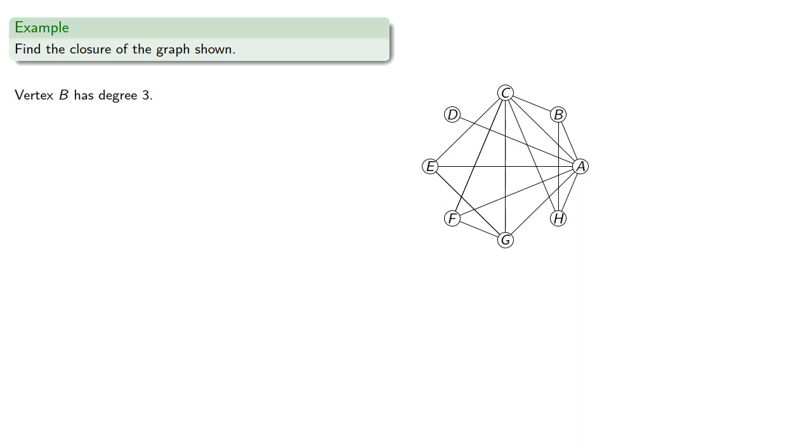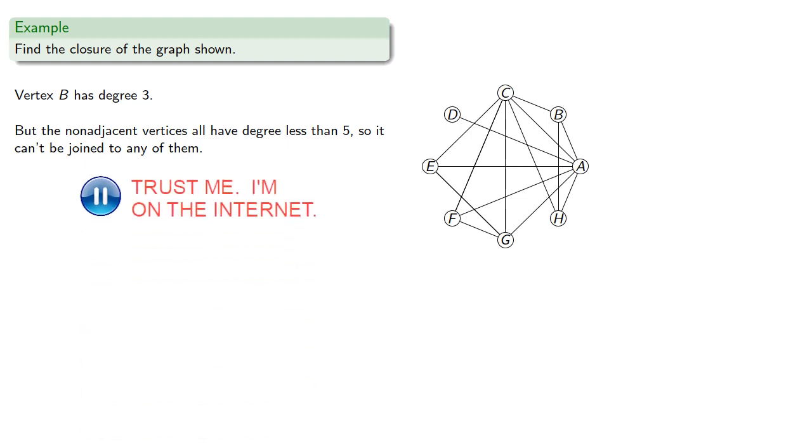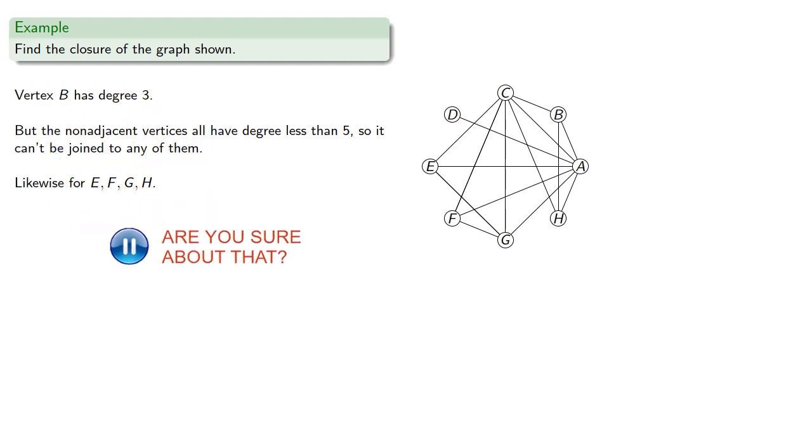Vertex B has degree 3, but all non-adjacent vertices all have degree less than 5, so it can't be joined to any of them. And a similar argument for E, F, G, and H. And so this is the closure of the graph.